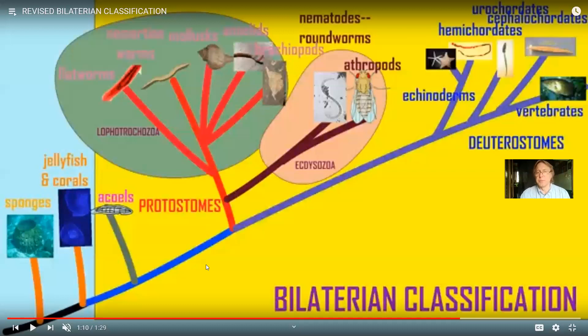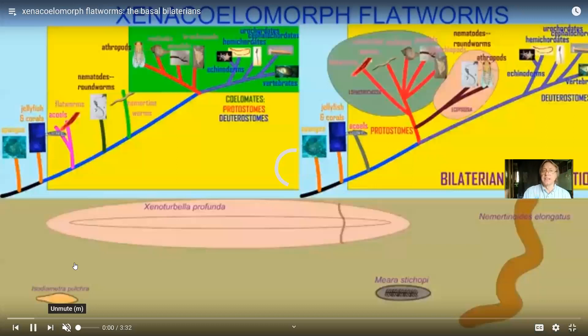You could name some anatomical traits that unite the Ecdysozoa — for example, nematodes and arthropods both molt. That's what the name Ecdysozoa refers to. So you can come up with anatomical traits which unite them, but it's primarily a genetic comparison. Some of the tree is the same. And so now what was once called one group of flatworms is now split into two groups of flatworms.